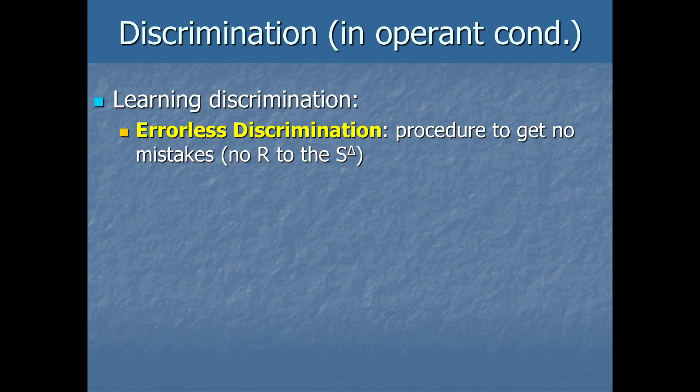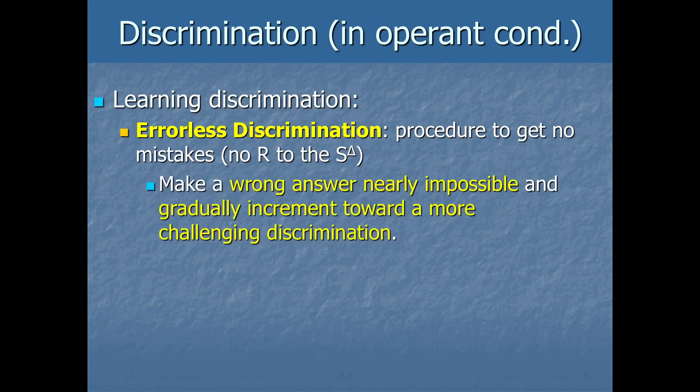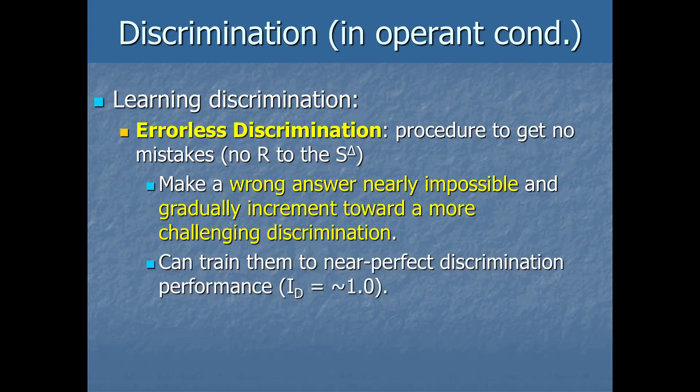Basically, what you want to do is make a wrong answer nearly impossible. So you start with super easy discrimination or very obvious hints or maybe even forcing them to do the corrective behavior and then rewarding it. And then you gradually increment towards a more challenging discrimination or towards giving less and less of a hint. So basically, if you don't allow errors along the way, if they're always getting it right during the training, then you can actually train them up to near perfect discrimination performance, like a discrimination index near 1.0. But there is a downside to errorless discrimination if you do that as a training. The downside is it's hard to reverse or undo. So if you want flexible behavior, you want someone that can adapt when circumstances change, this isn't necessarily ideal.